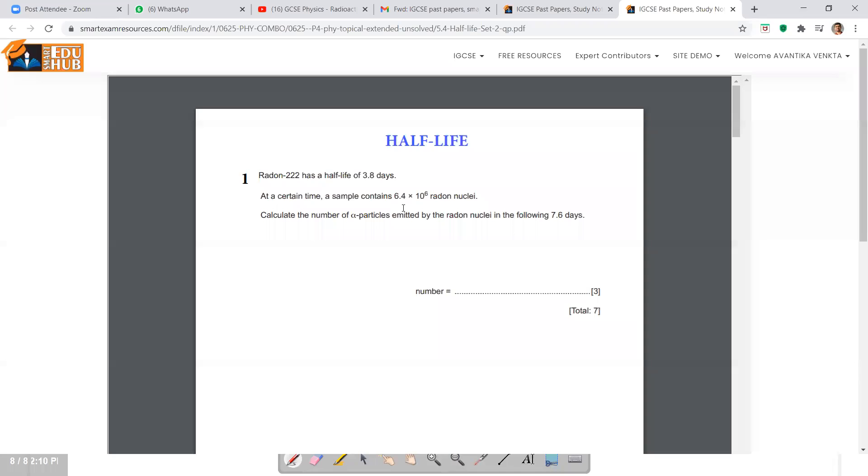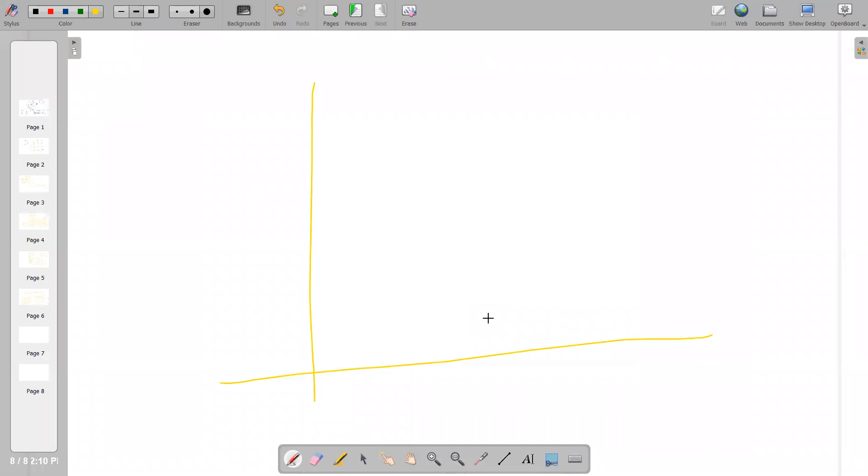Okay, so each radon will emit one alpha particle. So basically, we need to find how many radon nuclei undergoes decay. So for this, we can make a curve here. It starts from 6.4×10^6.